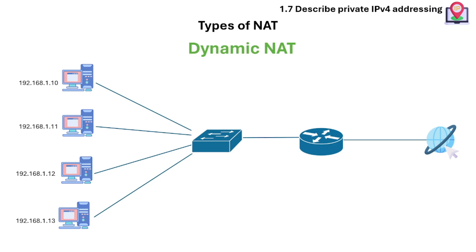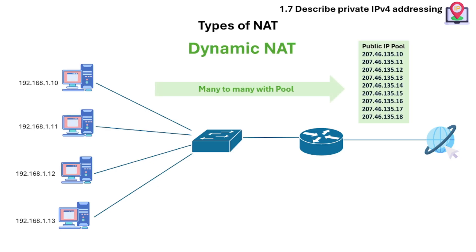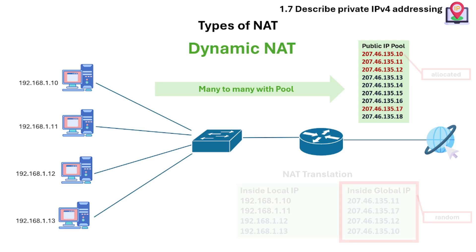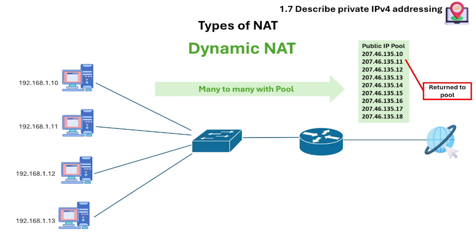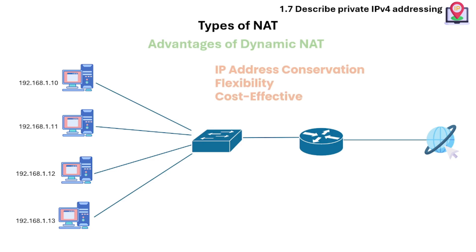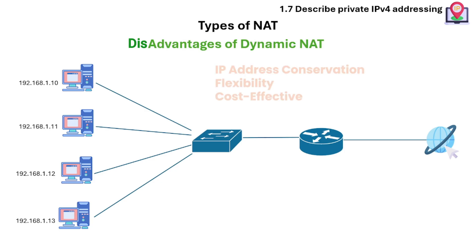Another type of NAT is dynamic NAT, which uses a pool of public IPs. Multiple internal IP addresses get dynamic translation through a public IP address pool. The router assigns public IP addresses from its allocated pool after internal network devices start their connection to the external network. After the connection terminates, the public IP address is returned to the pool for potential reassignment. Some use cases include home networks, small office networks, and temporary connections. Advantages are IP address conservation, flexibility, and cost-effectiveness. The disadvantages are complexity and overhead.